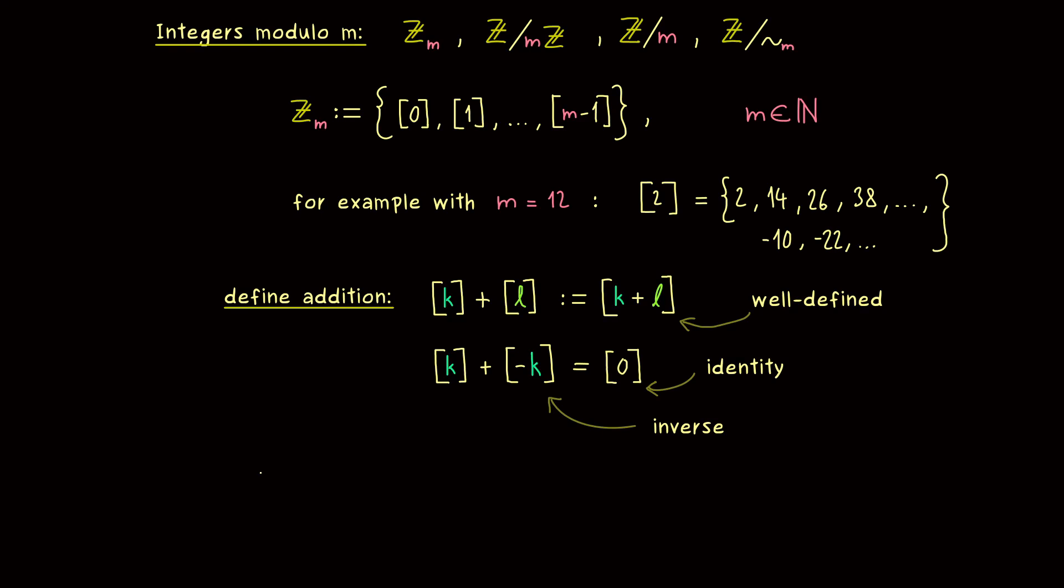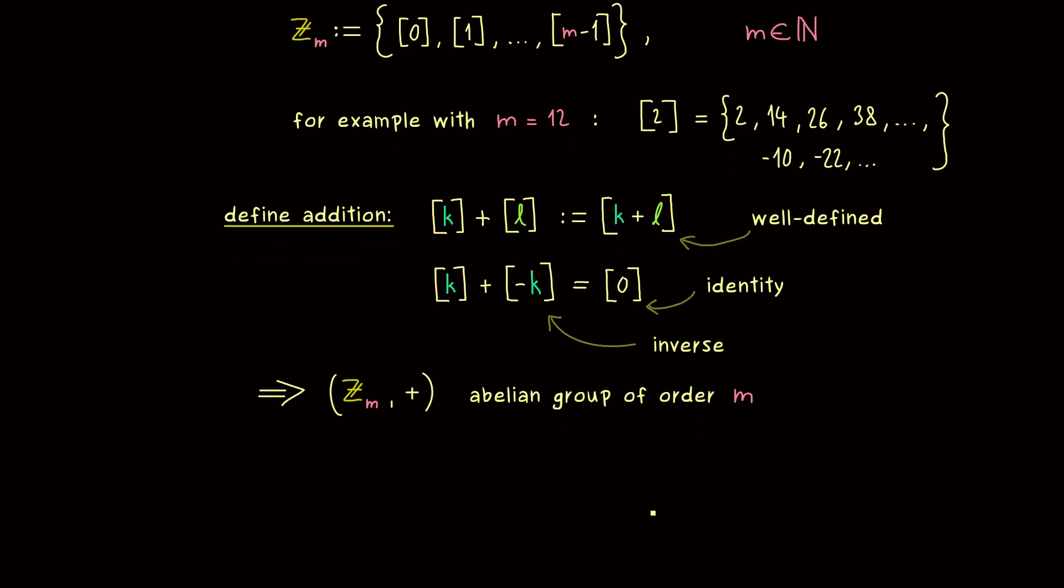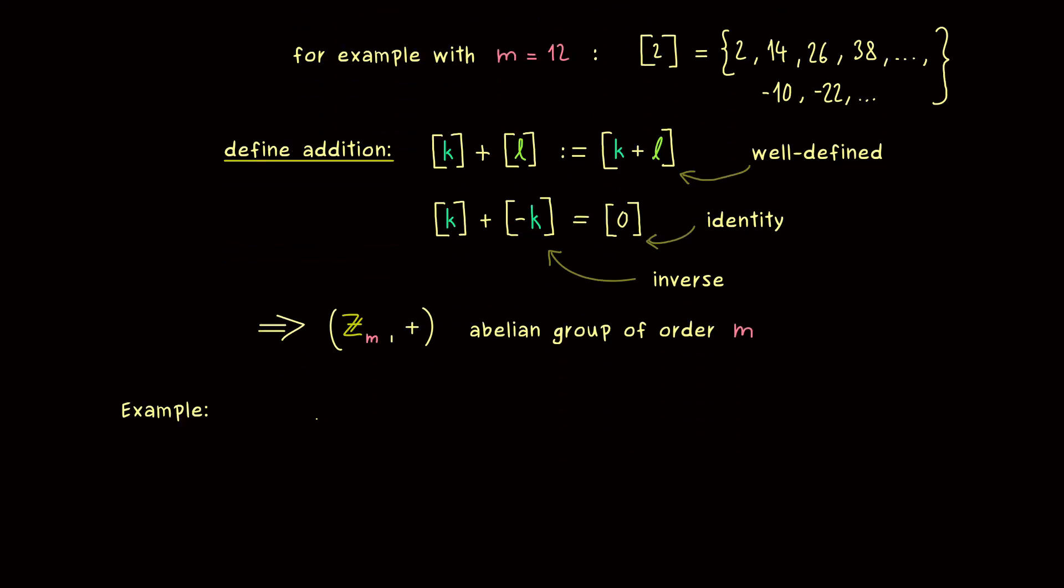Moreover, it's also commutative, so it's an abelian group. So now you can remember: the integers modulo m together with the addition form an abelian group, and the order is given by the modulo m. In other words, for each natural number you can write down an abelian group with the order exactly given by the natural number. Hence, I would say let's immediately look at an example for this.